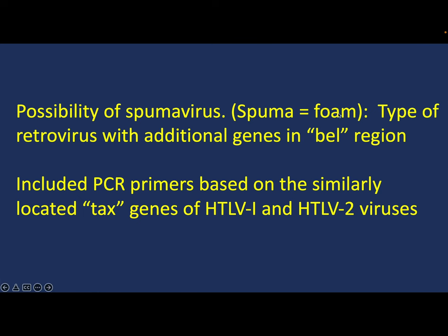Spuma is a Latin word for foam and this is a type of retrovirus which has additional genes in what is known as the bell region between the envelope gene and a long terminal repeat. So I therefore included primers that were based on similarly located tax genes of human T lymphotropic viruses 1 and 2. That was very fortuitous because we then found that they too were giving us a reliable positive polymerase chain reaction in chronic fatigue patients.